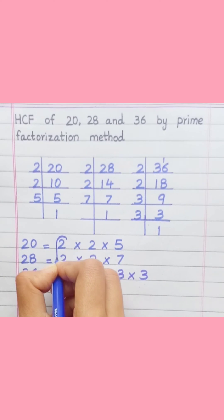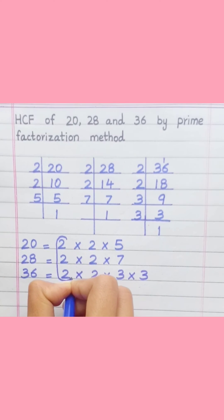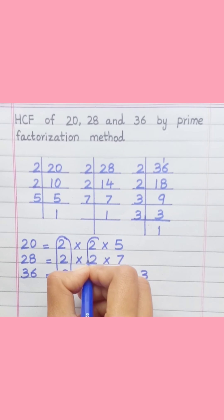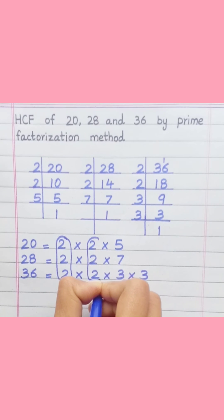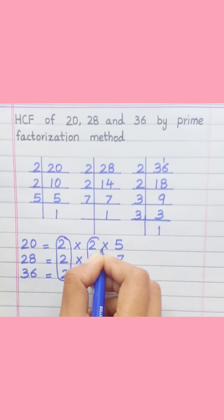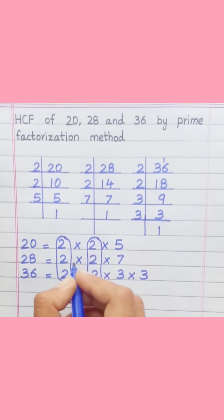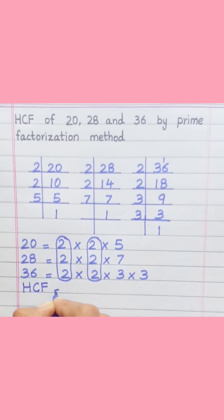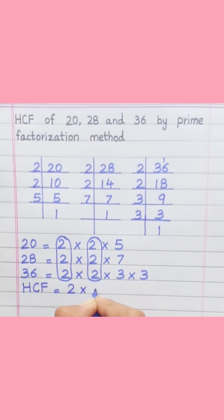Loop the factors that are common to all of the given numbers. HCF is equal to the product of all common factors: 2 × 2 = 4.